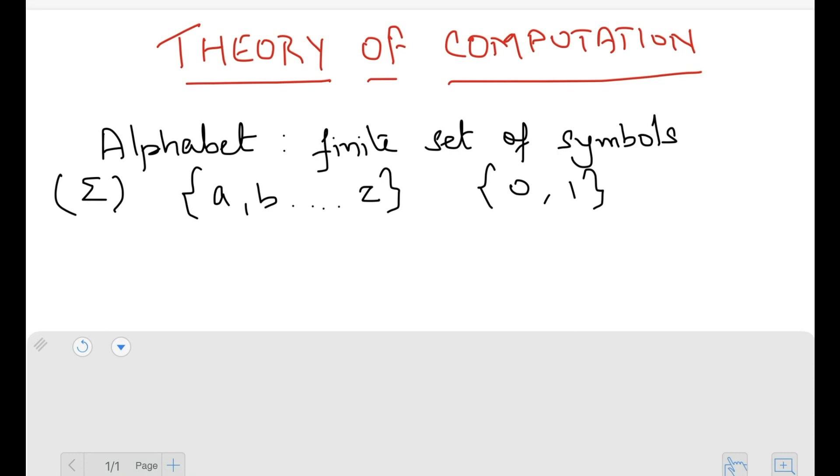And then what we can do is we can define a string over some alphabet. So a string over some alphabet sigma is a finite sequence of symbols from that alphabet, from sigma. That's what a string is.